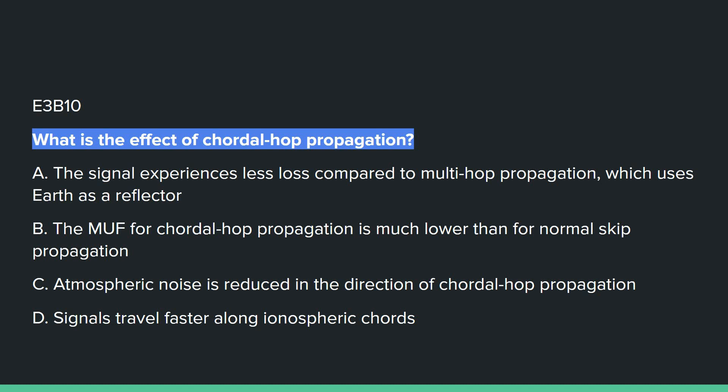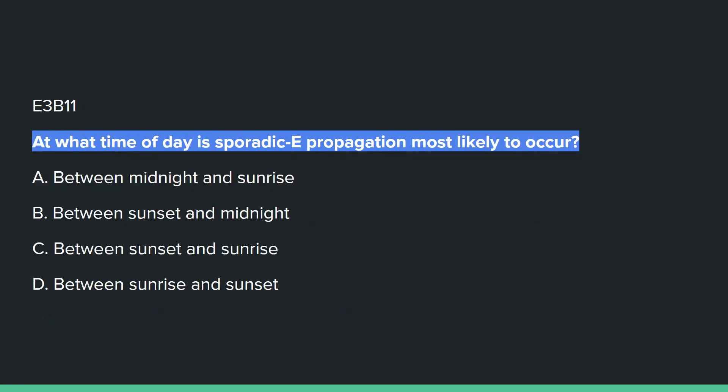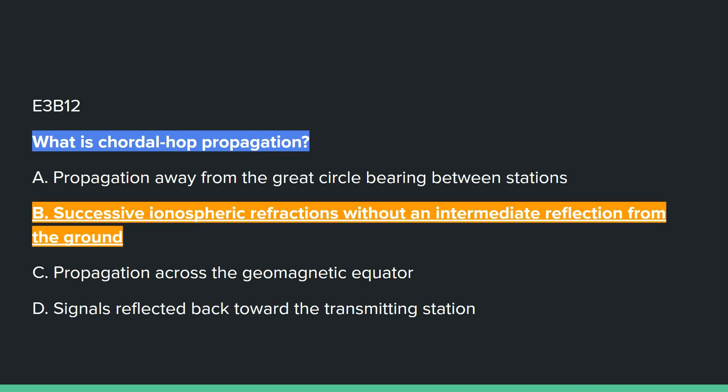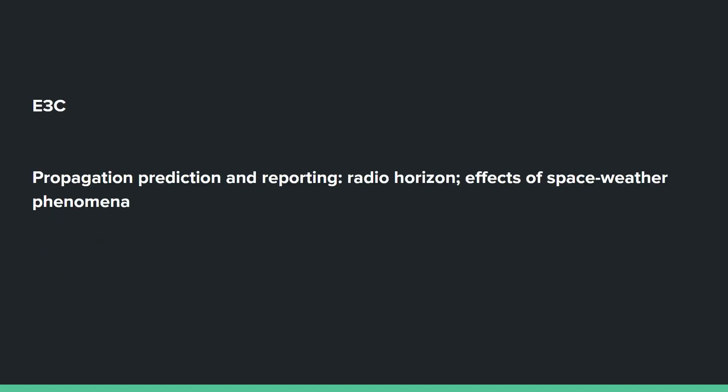E3B10: What is the effect of chordal hop propagation? A: the signal experiences less loss compared to multi-hop propagation, which uses Earth as a reflector. E3B11: At what time of day is sporadic E propagation most likely to occur? D: between sunrise and sunset. E3B12: What is chordal hop propagation? B: successive ionospheric refractions without an intermediate reflection from the ground. E3B13: What type of polarization is supported by ground wave propagation? A: vertical.